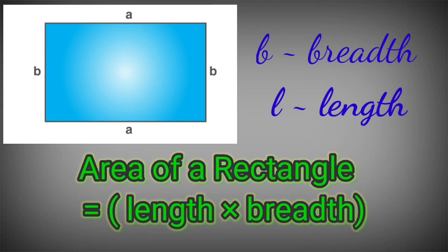A parallelogram is a four-sided closed figure having opposite sides parallel to each other. We can find the perimeter of a parallelogram using the formula: twice the sum of its sides. The area of a parallelogram is base into height, where the height is the distance between the two parallel sides.